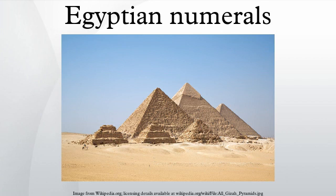Fractions: rational numbers could also be expressed, but only as sums of unit fractions — that is, sums of reciprocals of positive integers, except for 2/3 and 3/4. The hieroglyph indicating a fraction looked like a mouth, which meant 'part.' Fractions were written with this fractional solidus, that is, the numerator 1 and the positive denominator below.